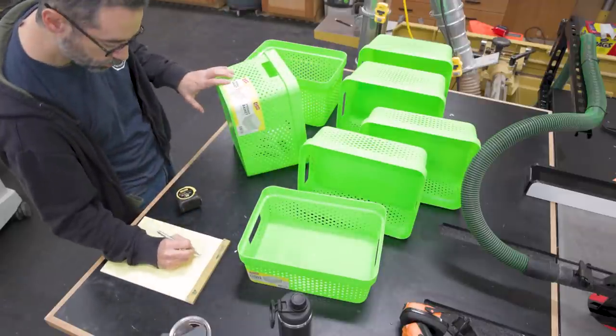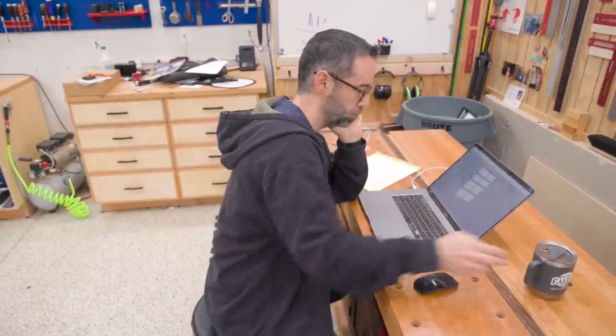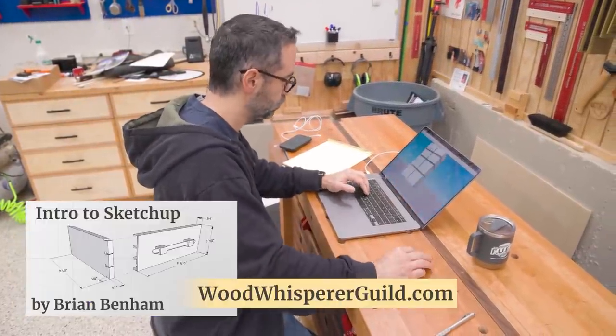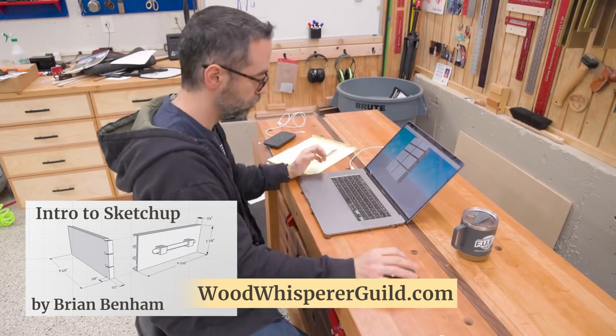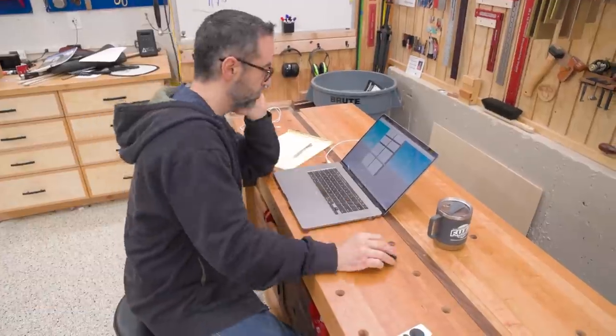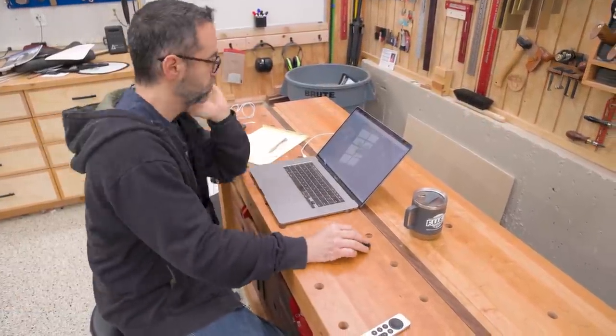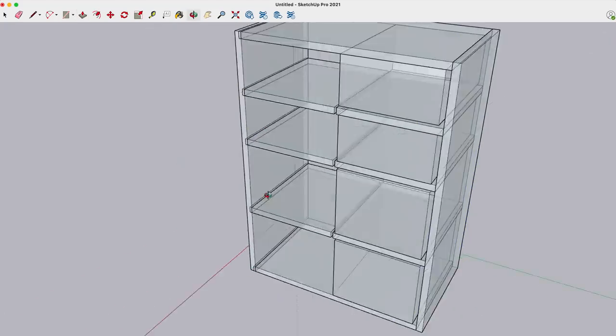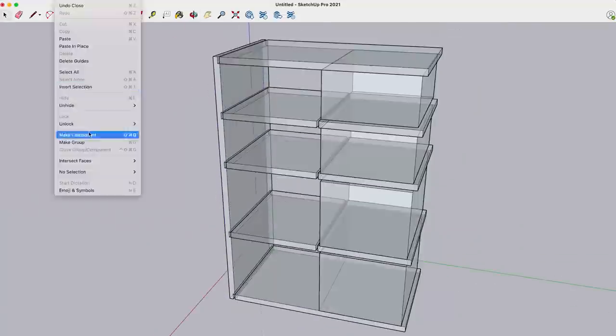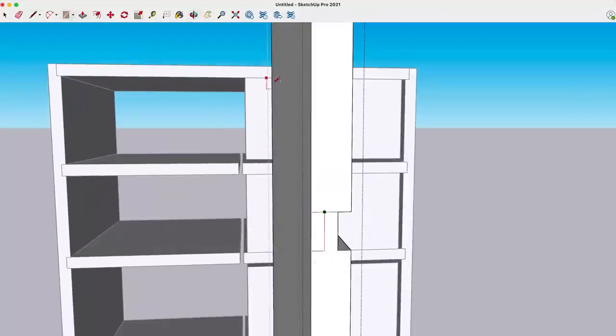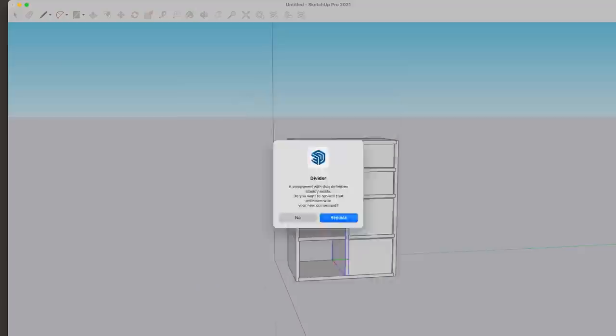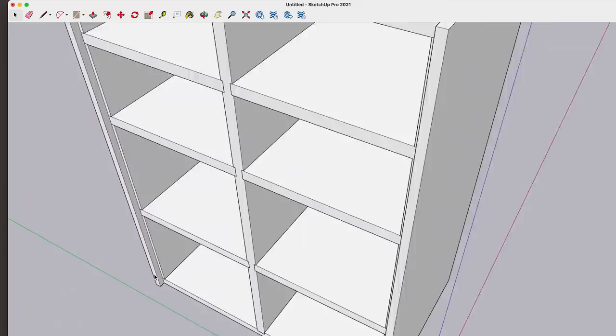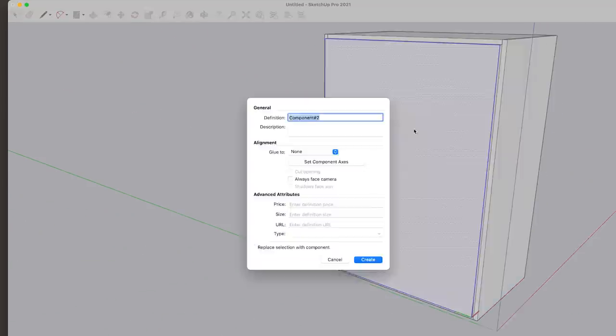The bins flare out at the top, so I'll take my measurements from there. Next I'll fire up SketchUp to mock it up. By the way, if you want to learn how to use SketchUp, we have an awesome course taught by a talented builder and designer, Brian Benham. It's available at the Wood Whisperer Guild. The course is even taught using the free web version of SketchUp, so there's no software to buy. Once I have the boxes in place, I can design the case around them. Each compartment will be a quarter inch bigger in each dimension to allow for some wiggle room.